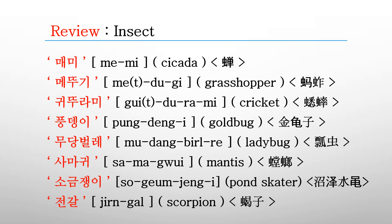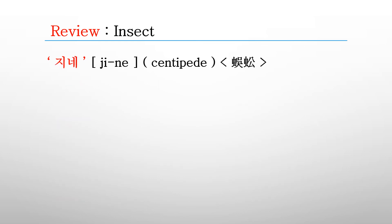The grasshopper is 메뚜기. The cricket is 귀뚜라미. The gold bug is 풍뎅이. The ladybug is 무당벌레. The mantis is 사마귀. The pond skater is 소금쟁이. The scorpion is 전갈. The centipede is 진네.